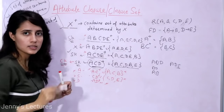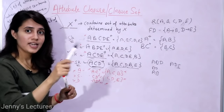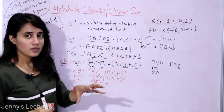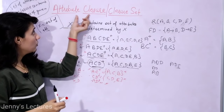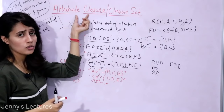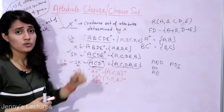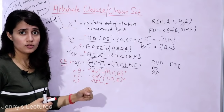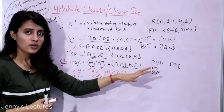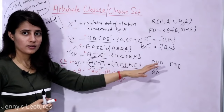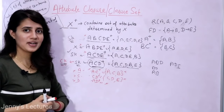The main goal of this video was to understand what attribute closure is and how to find it, and to see why attribute closure is needed — specifically to find super keys and candidate keys. We will discuss a simple shortcut trick to find all candidate keys in the next video. See you then — take care.